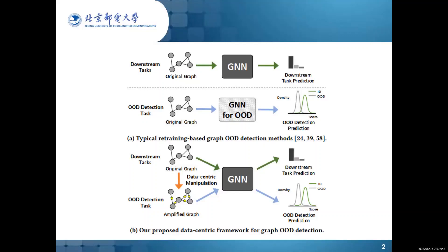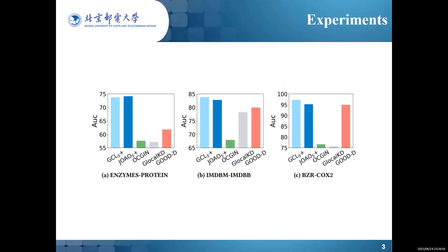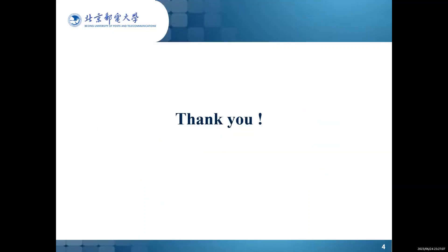Here are some of our experimental results. The first two columns are our framework equipped with different encoders, and we can find that our framework can significantly outperform other baselines. In summary, we propose a data-centric framework for graph OOD detection, while other works are model-centric. That's all — thanks for your time.